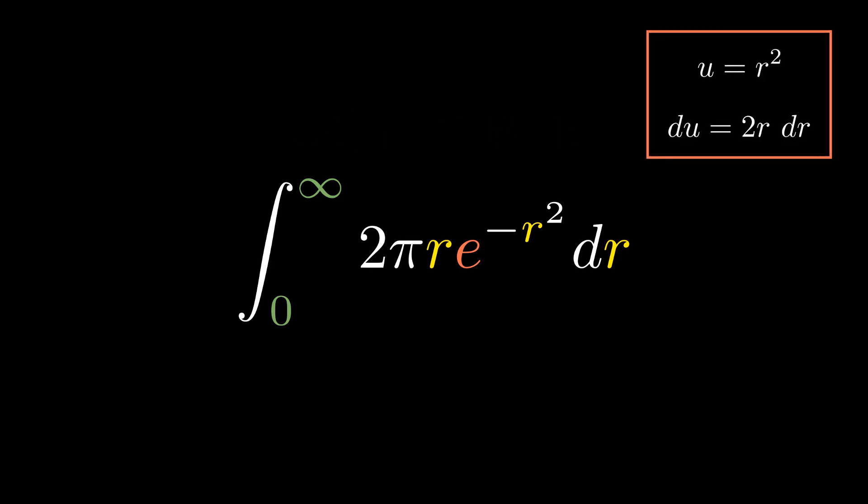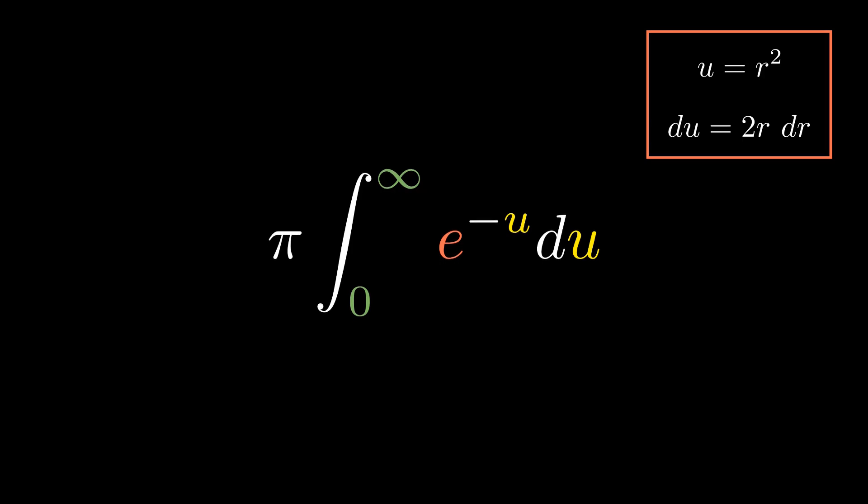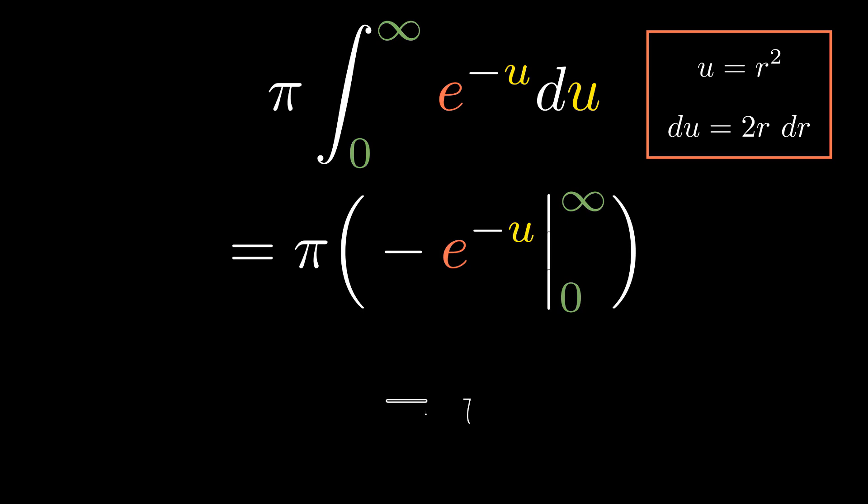We can set u equal to r squared, du becomes 2r dr. So, our volume is equal to the integral from 0 to infinity of pi times e to the negative u du. Calculating this is easy enough using the fact that the integral of e to the u is just e to the u and we get the final result as pi.